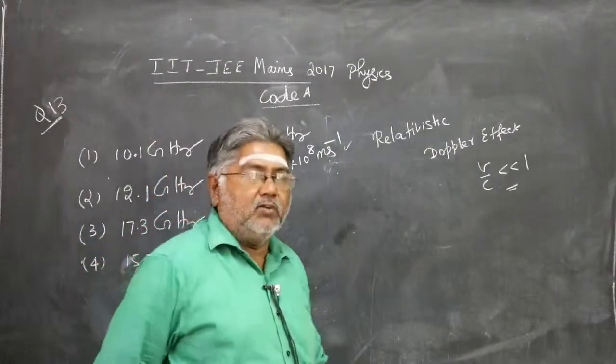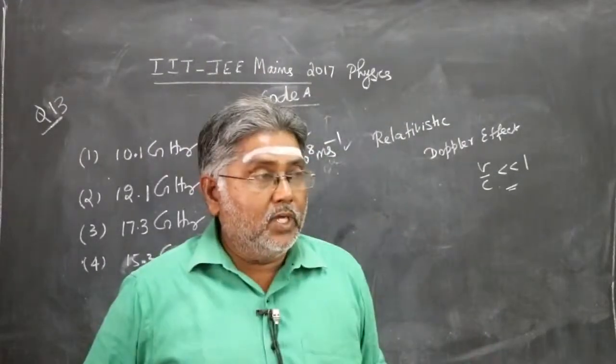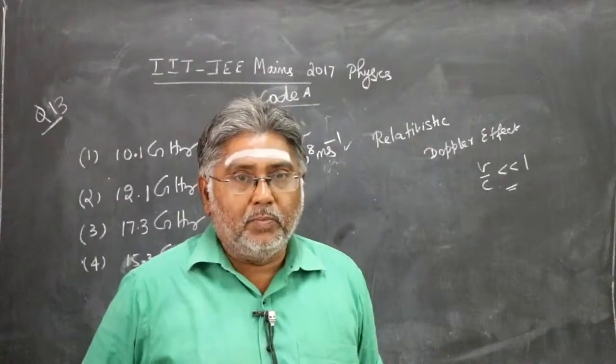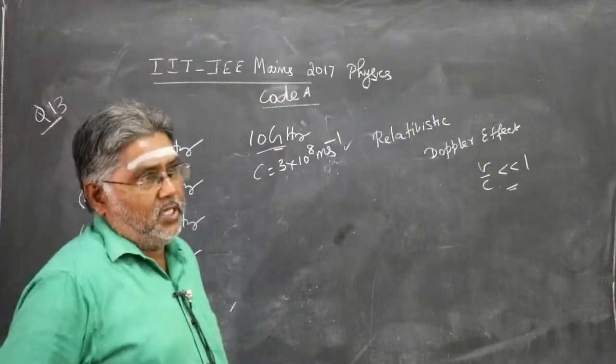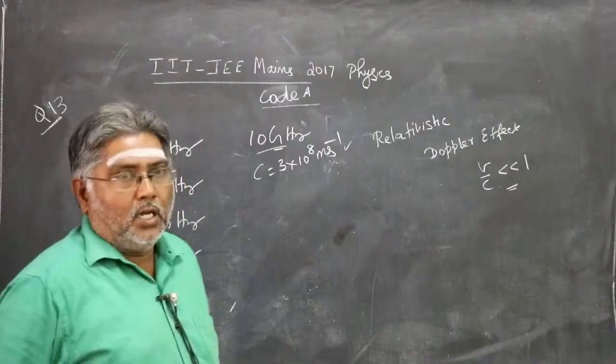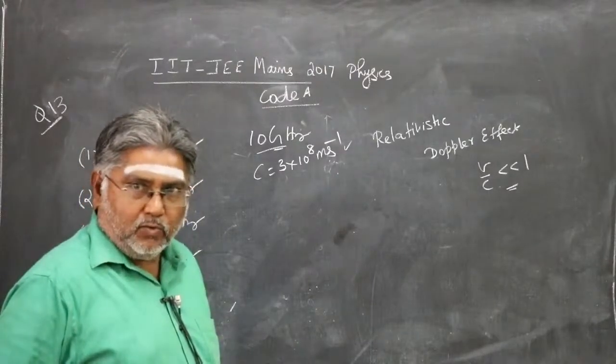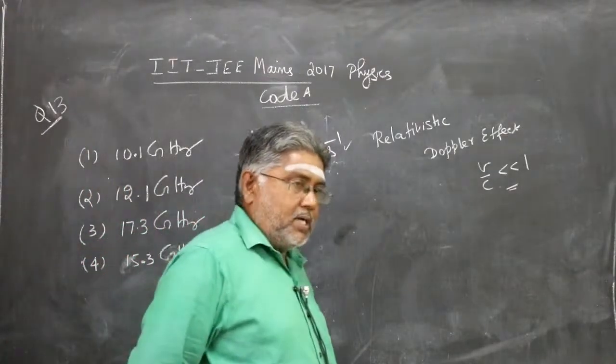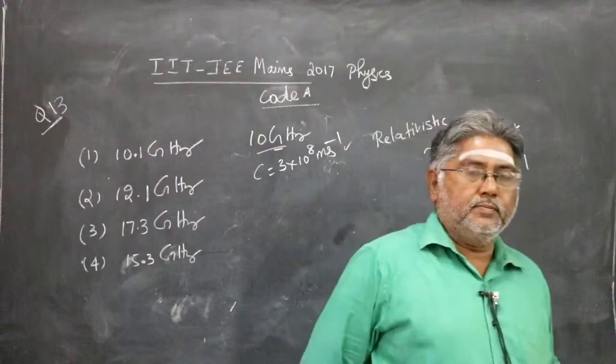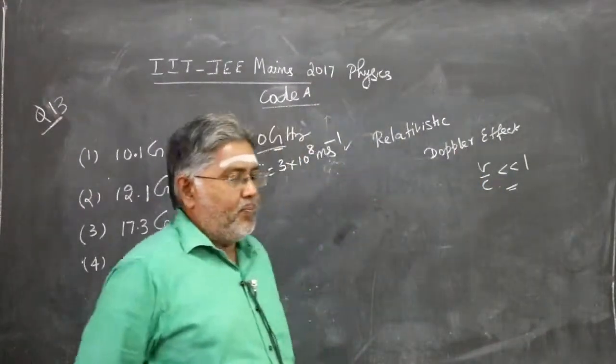But here V by C is not very less than 1, it's not negligible. V by C is half, so here V by C is not to be considered as a negligible entity. V by C is close to 1—it can't be greater than 1 for anything, but it is very close to 1. So it is a relativistic case.